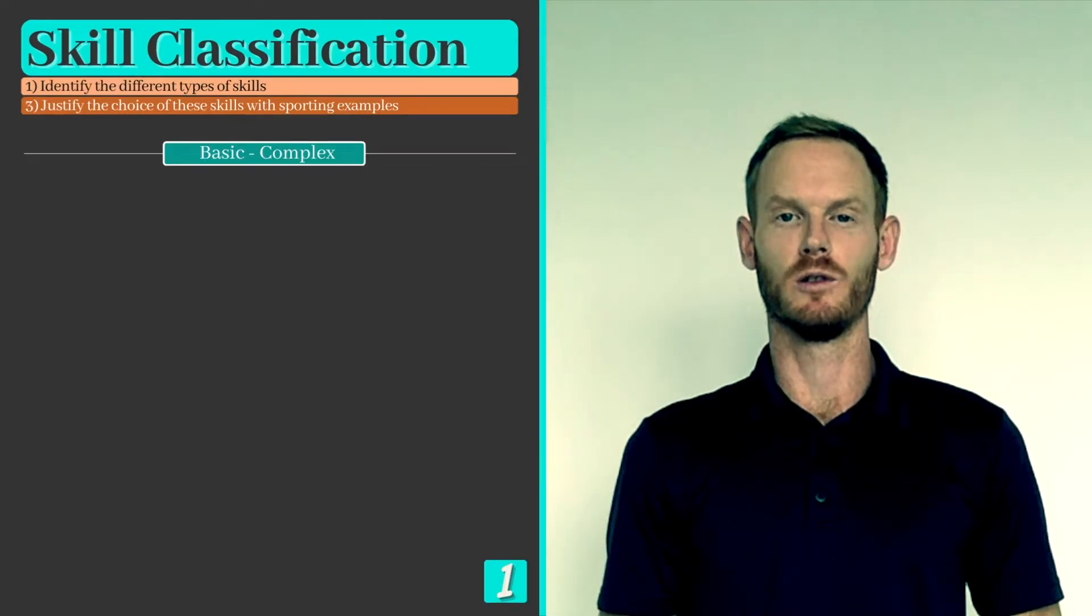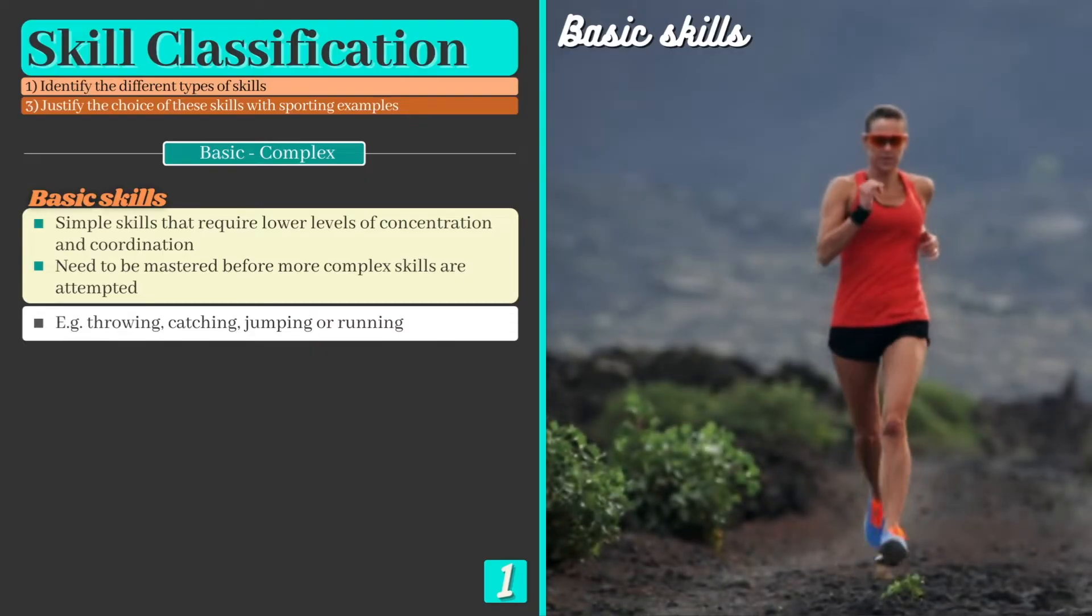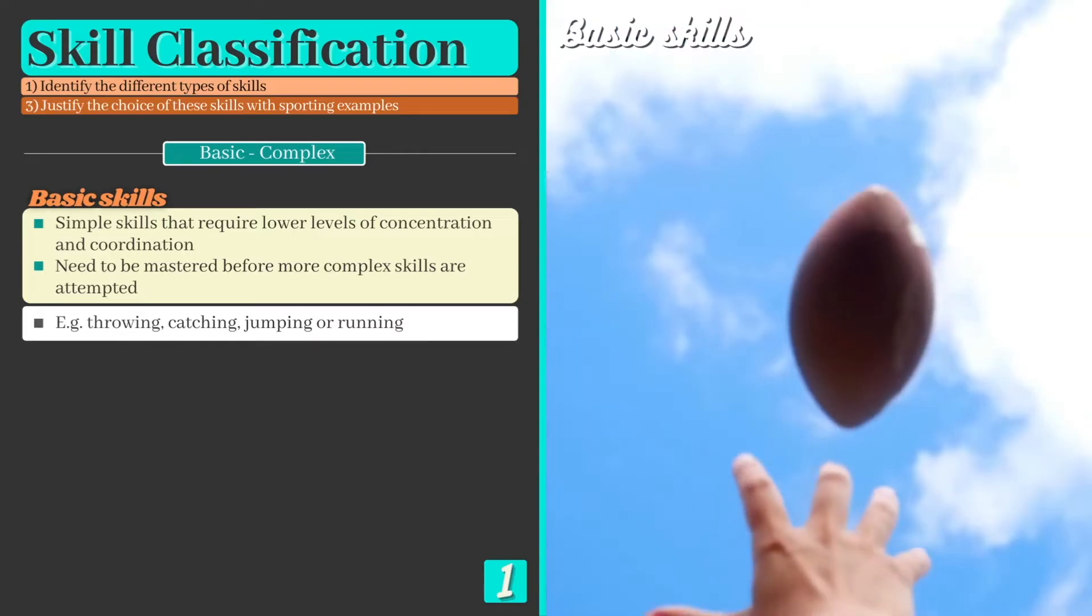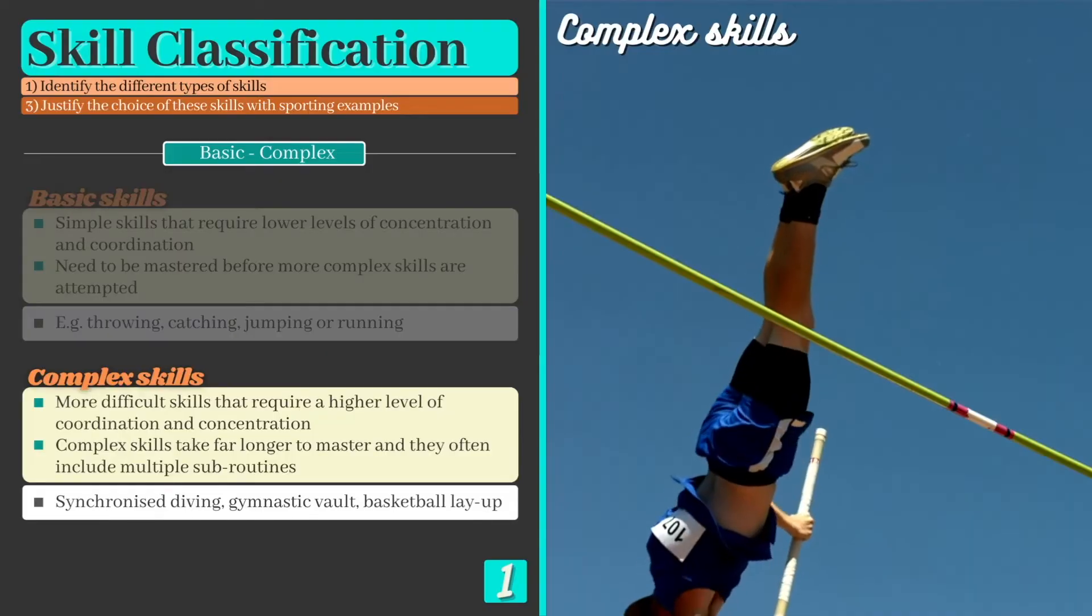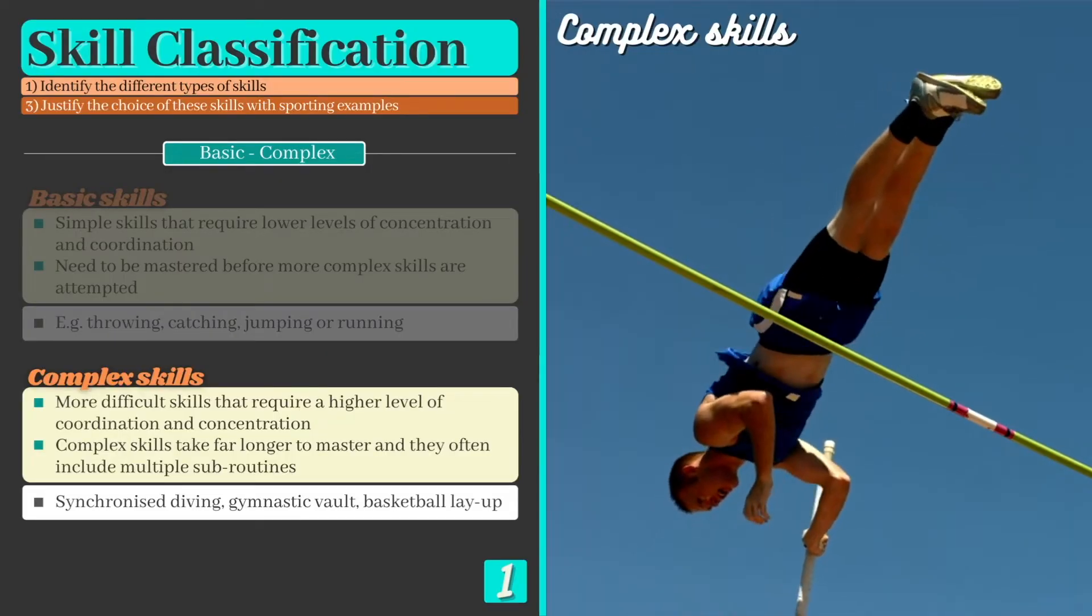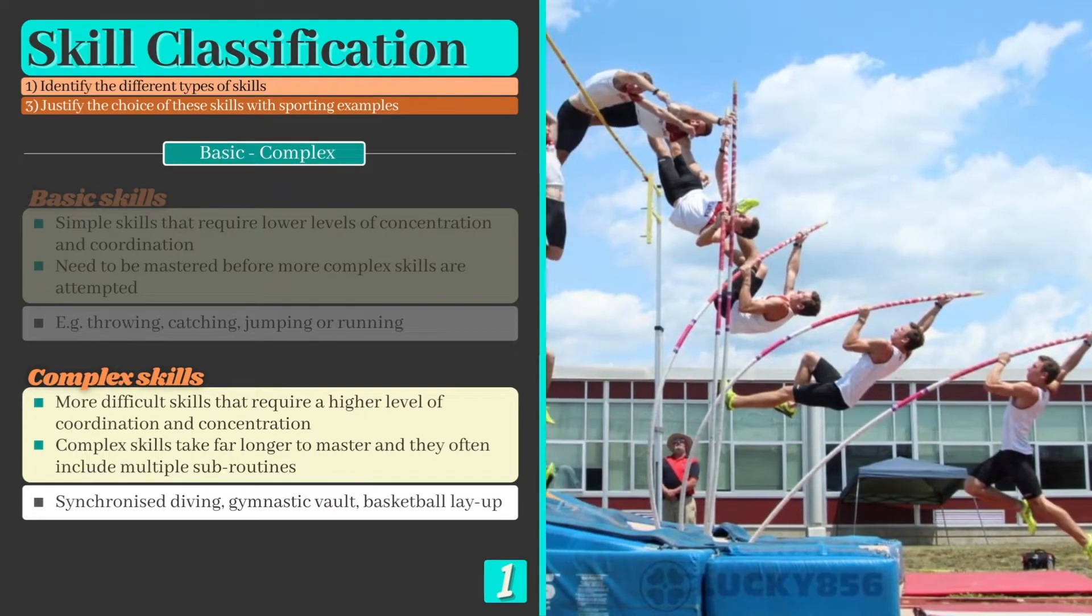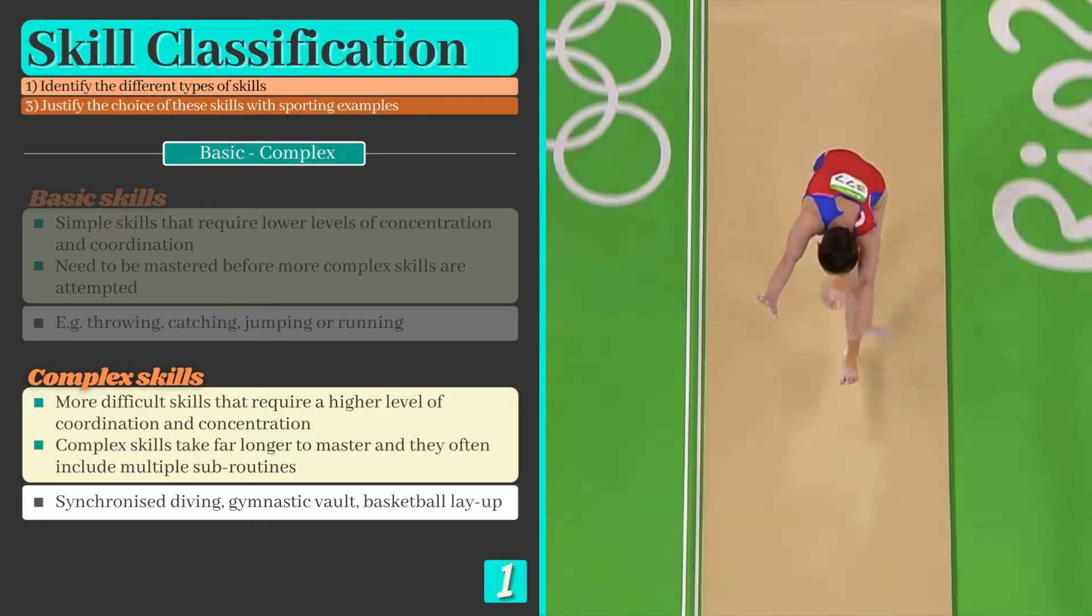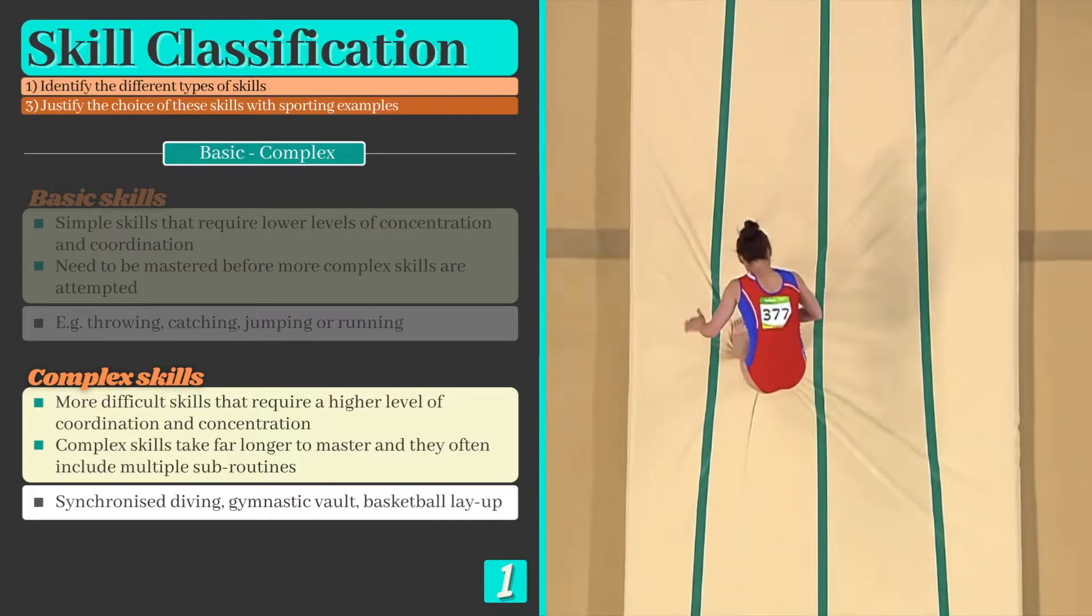On the most straightforward level skills can be either basic or complex. Basic skills are simple skills such as throwing, catching or running that require lower levels of concentration and coordination. Basic skills are typically taught first as they need to be mastered before more complex skills can be attempted. Complex skills by comparison are more difficult skills that require higher levels of concentration and coordination. Complex skills take far longer to master and they often include multiple subroutines. Examples include synchronised diving or a gymnastic vault which combines several precise and technical movements.